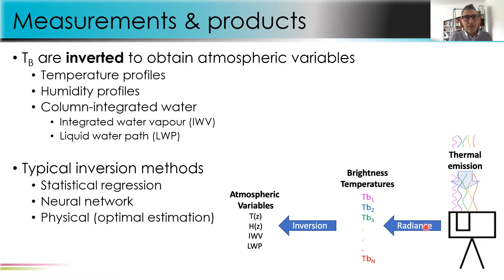Brightness temperatures are then inverted to obtain atmospheric variables: temperature profiles, humidity profiles, and column-integrated water — integrated water vapor and liquid water path. Inversion methods include statistical regression and neural networks, usually provided by manufacturers in their software. More physical methods like optimal estimation or 1D-Var are also available as downloadable tools. Profiling capabilities come from differential absorption: different channels correspond to different absorption depths, visualized through weighting functions, which show the contribution of different atmospheric layers to the observations.